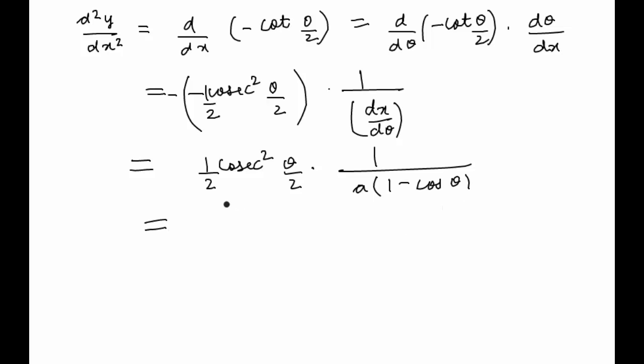So here we will get cosec squared theta by 2 over 2a times 1 minus cos theta, which can also be written as 2 sin squared theta by 2. This will give us 1 by 4a cosec to the power 4 theta by 2.